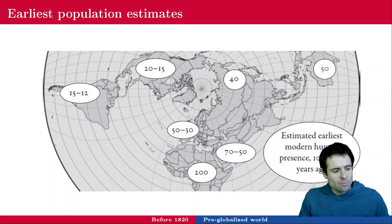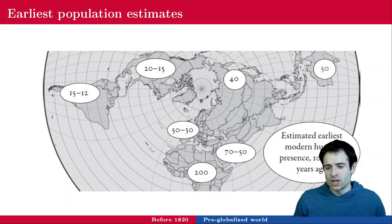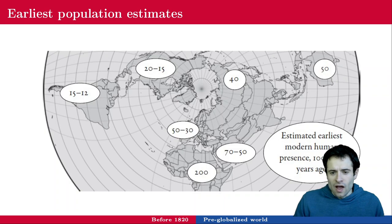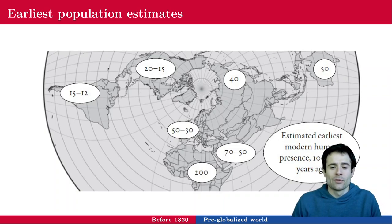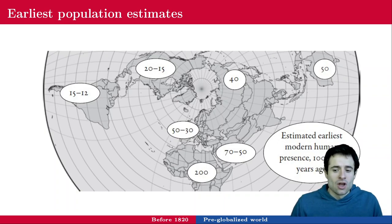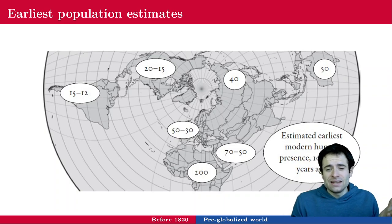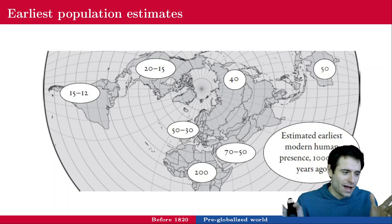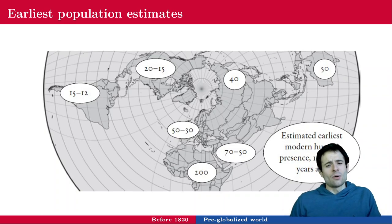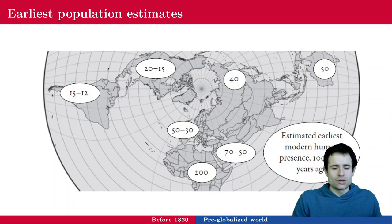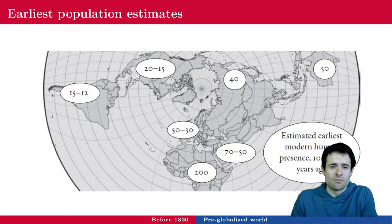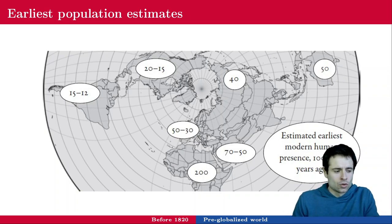Here is a map of the earliest population estimates, not very relevant for the rest of the course but to give you an idea of where the oldest populations are from. Getting data from 200,000 years ago is very complicated. Researchers use climate, weather, and whatever traces and bones they could find to try to trace back those populations.